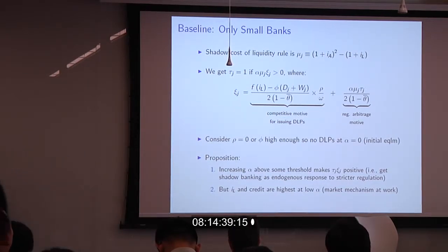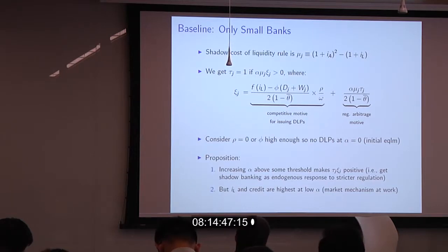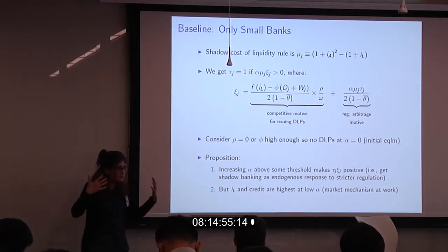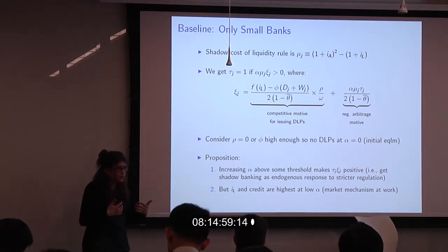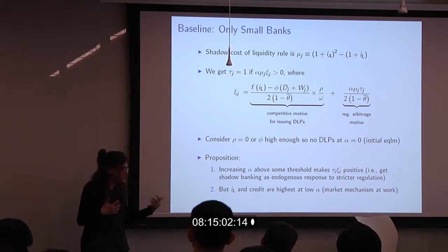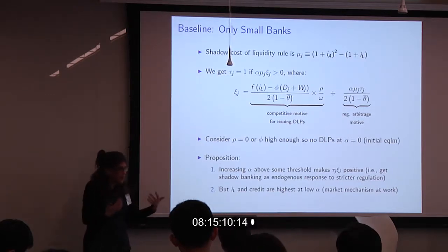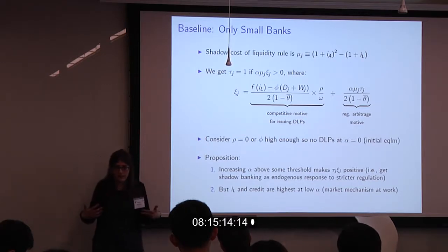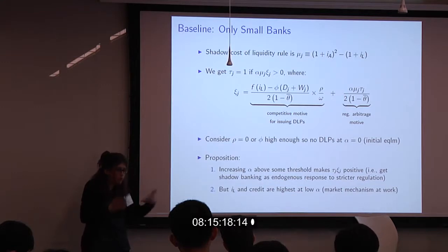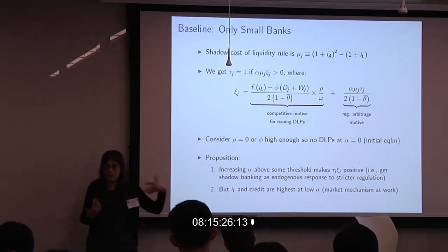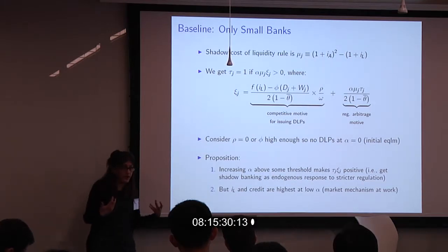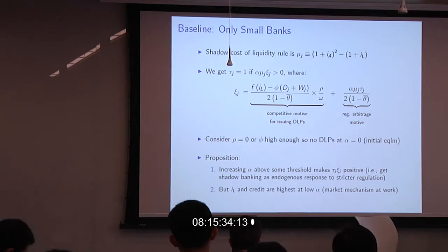The intuition is as follows. In market equilibrium, the interbank interest rate is highest in the absence of government regulation. If the interbank rate were very low, each individual bank would think it doesn't need to hold its own liquidity and can just borrow on the interbank market — but that can't be an equilibrium. So without government regulation, market forces drive the interbank rate very high to compel banks to hold their own liquidity, meaning liquidity holdings are high and credit is low.